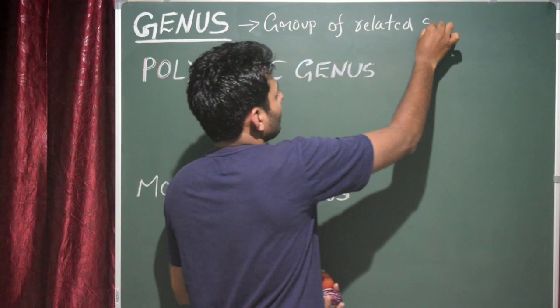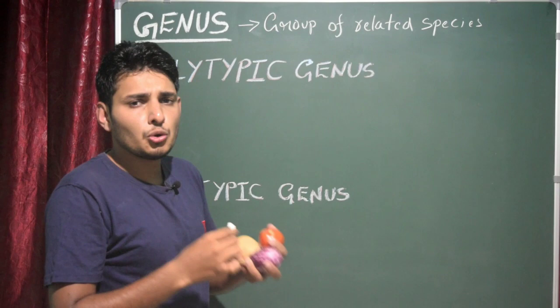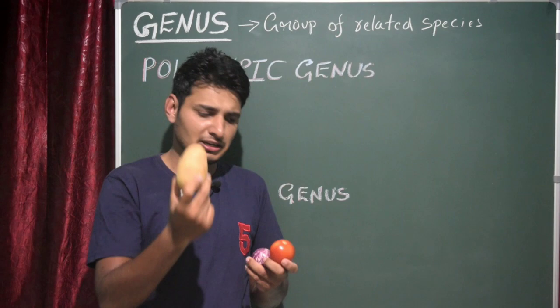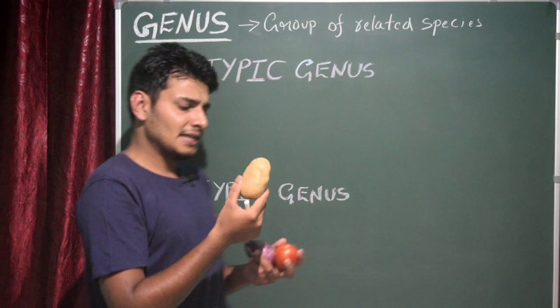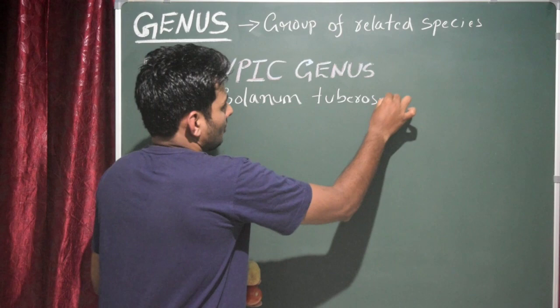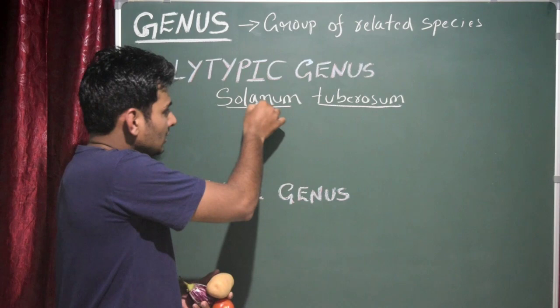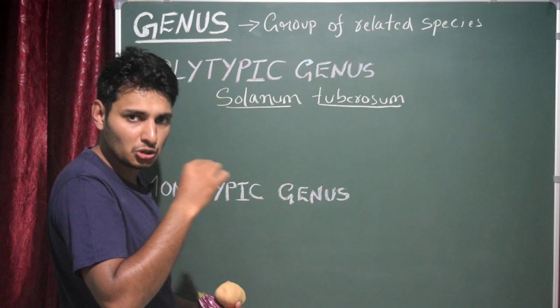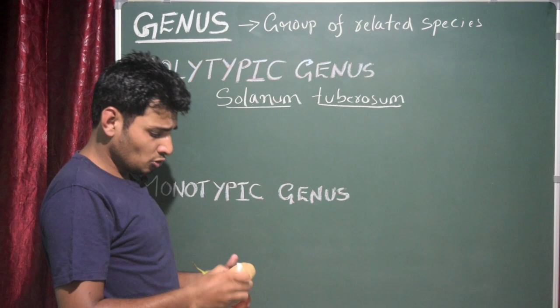Whatever species belong to a genus should exhibit certain common features. We can understand this by taking three different organisms. This is potato, this is tomato, and this is brinjal. The scientific name of potato is Solanum tuberosum — this is binomial nomenclature. Solanum is the genus name and tuberosum is the species name of the organism.